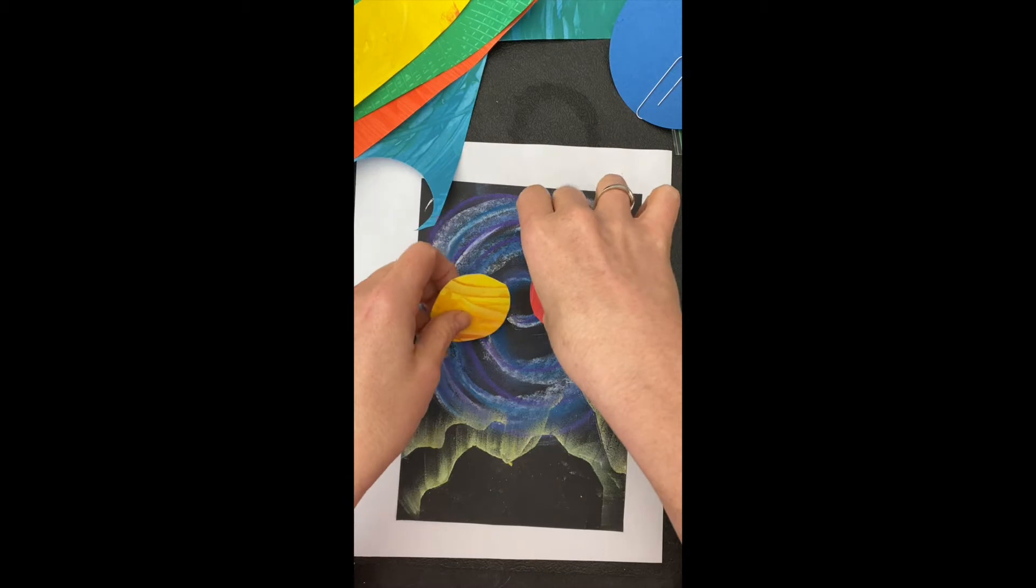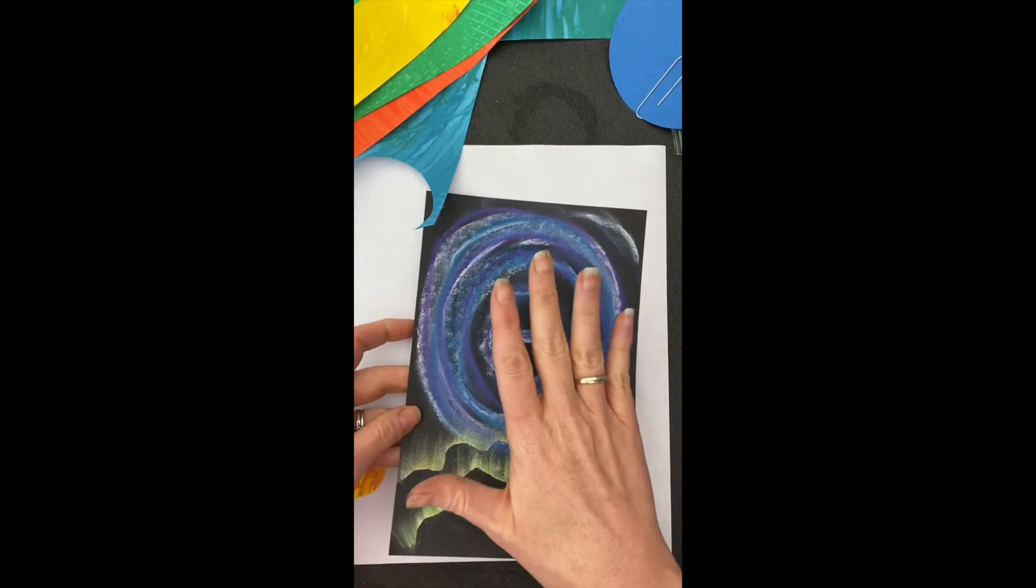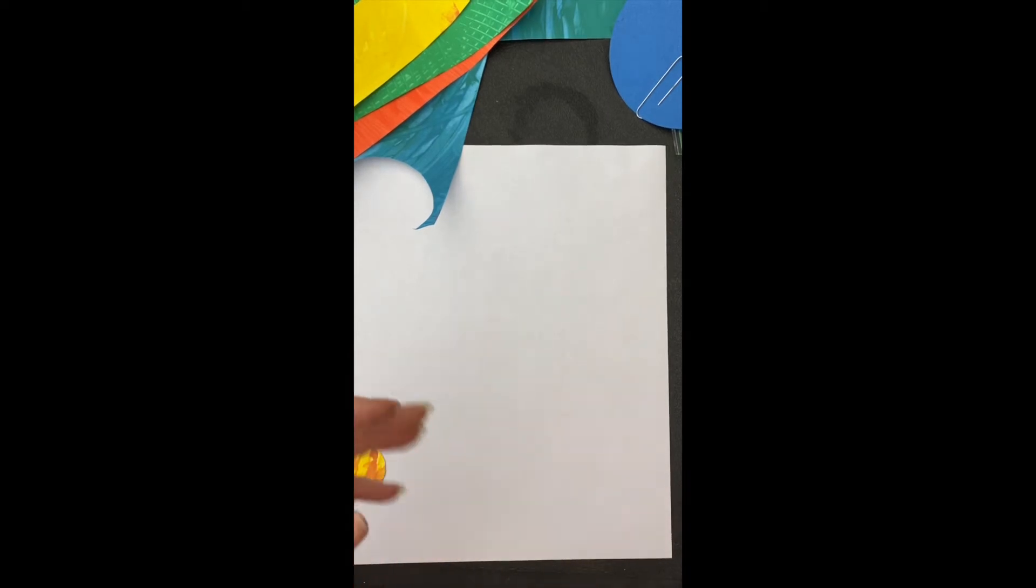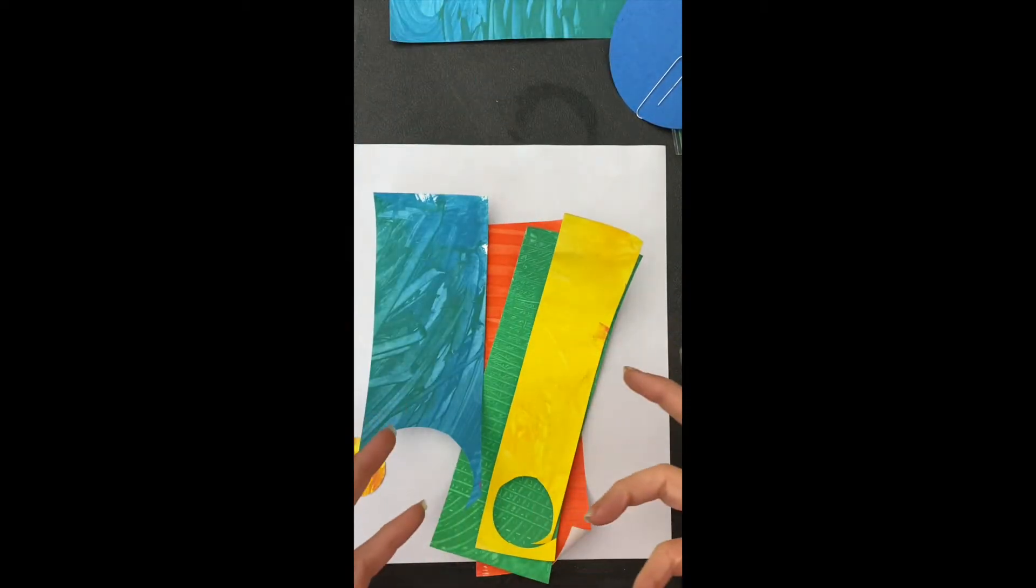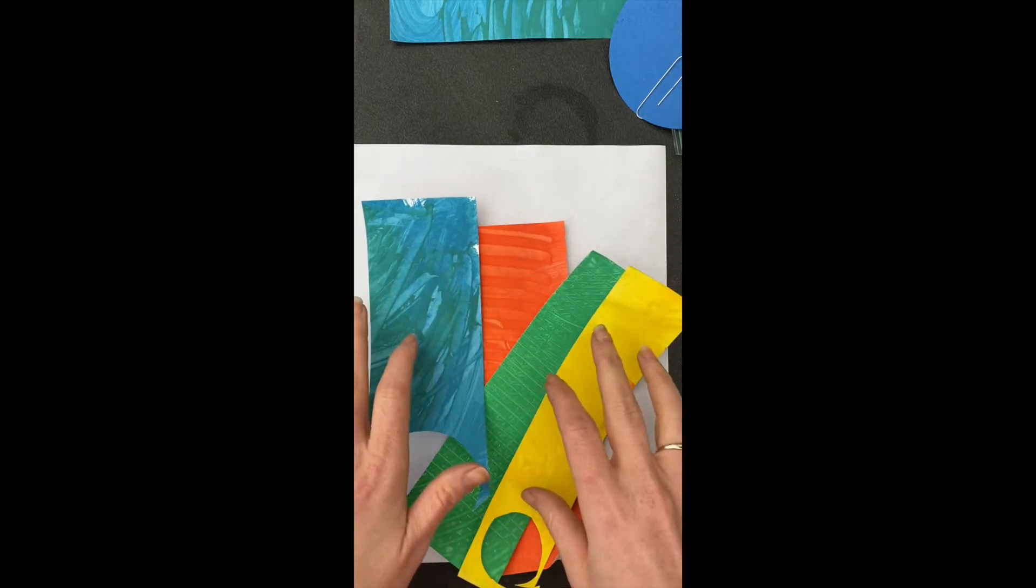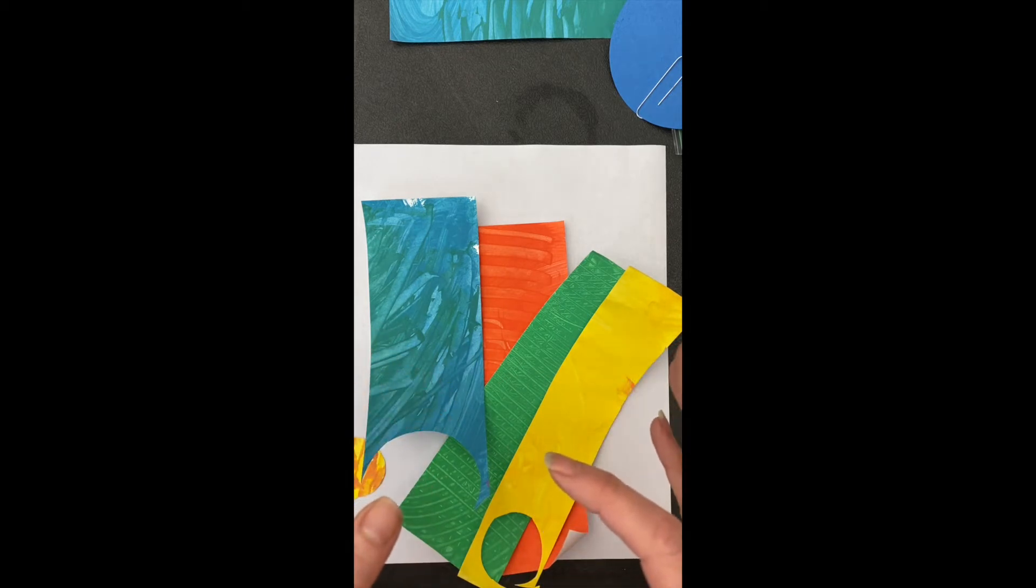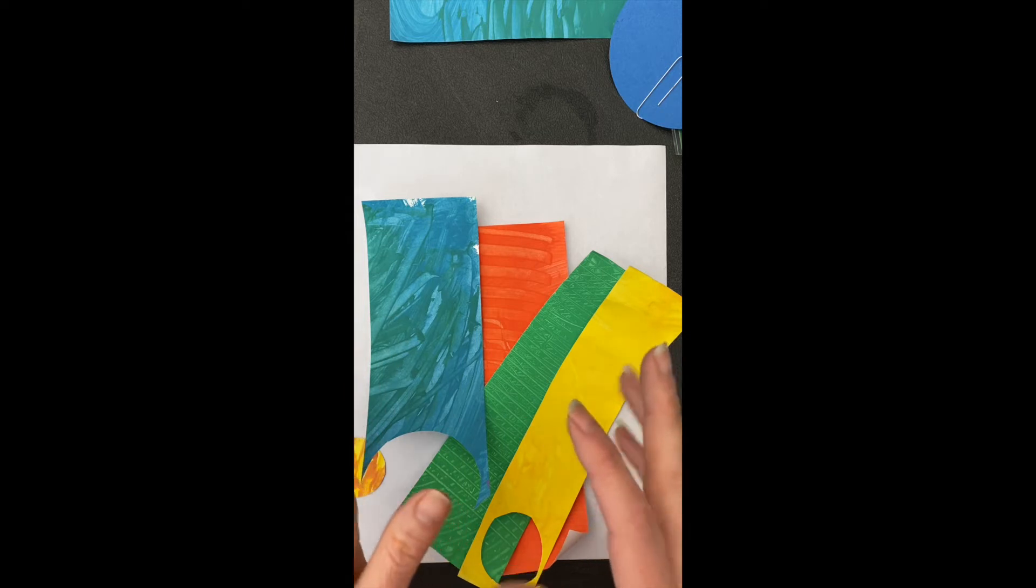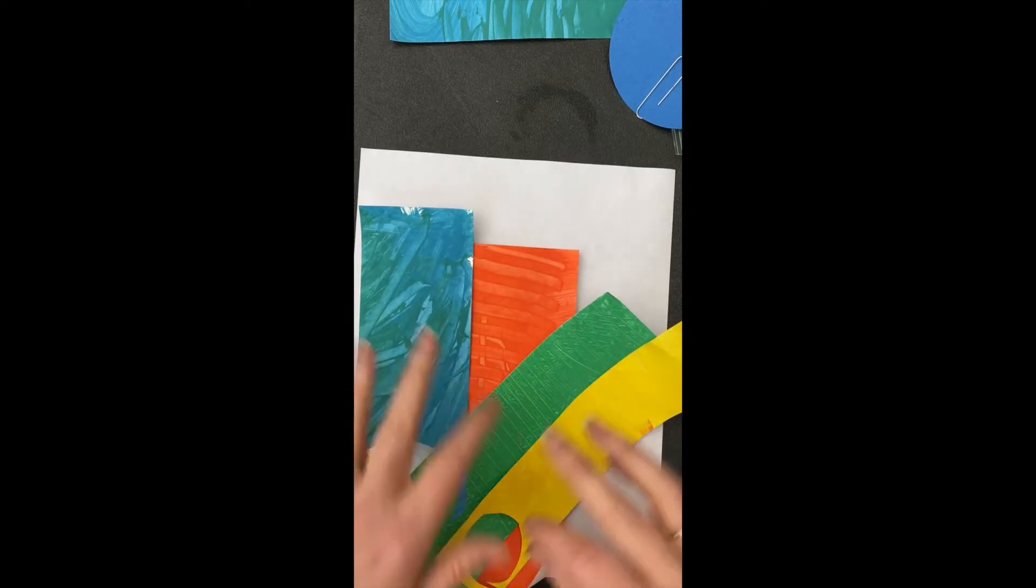So what you want to do today is move your galaxy off to the side so it doesn't get messy. And in your packet, you should have gotten some strips of colorful paper. So what I need you to do is cut circles from these papers. You need about four or five, maybe four to six different circles. You want to use a variety of sizes and a variety of colors.